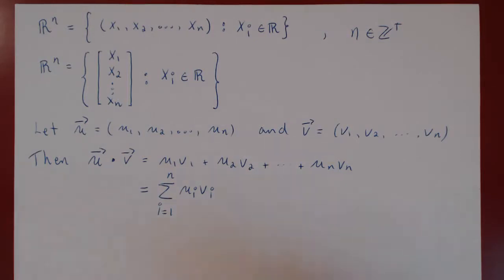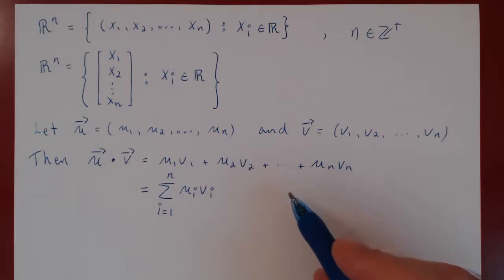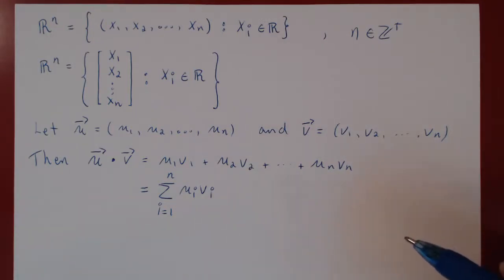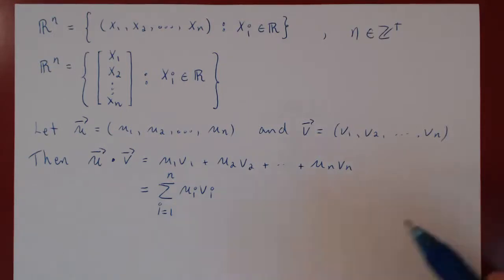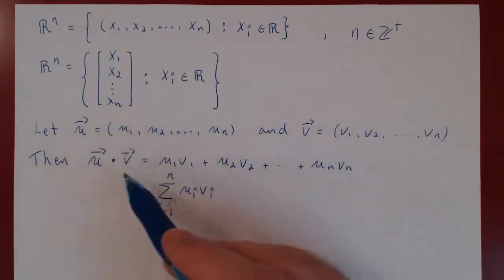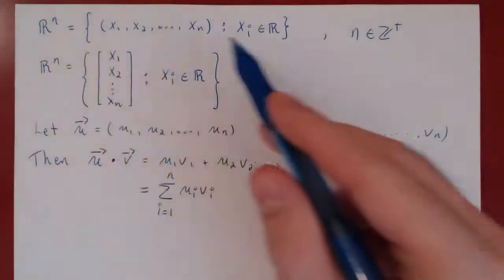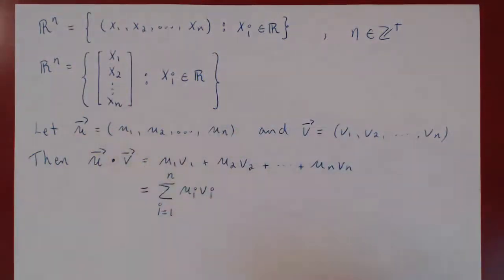What we want in this video is to consider the geometric notions about vectors. First, remember that the length of a vector came from Pythagoras' theorem — the length is the square root of the sum of the components squared. Let's see if we can build the norm of a vector in Rⁿ with the help of the dot product.